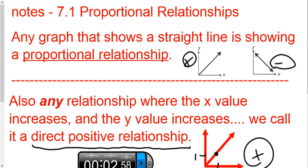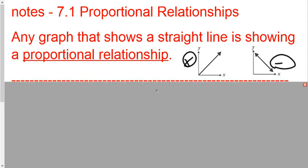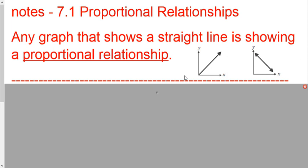Essentially, any graph that shows a straight line, like what we just did, is showing a proportional relationship. Here we've got a straight line on the Cartesian plane — it's only the first quadrant, so we just zoomed in there. It's a straight line, it's a proportional relationship. This other example is still a straight line, even though it's going down to the right. Both of these are examples of a proportional relationship.